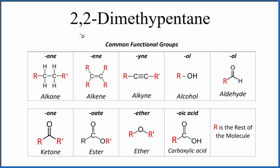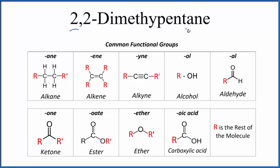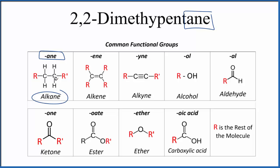Let's write the structural formula for 2,2-dimethylpentane. The first thing you'll notice is it ends in A-N-E. When we see that A-N-E, that's going to be an alkane — all carbon atoms with single bonds surrounded by hydrogen atoms.